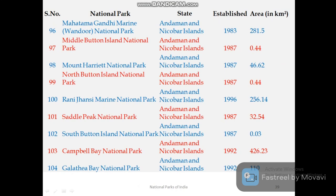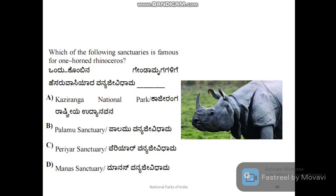Andaman and Nicobar has nine national parks: Mahatma Gandhi Marine National Park, Middle Button Island, Mount Harriet, North Button Island, Rani Jhansi Marine National Park, Saddle Peak, South Button Island, Campbell Bay, and Galathea National Park.